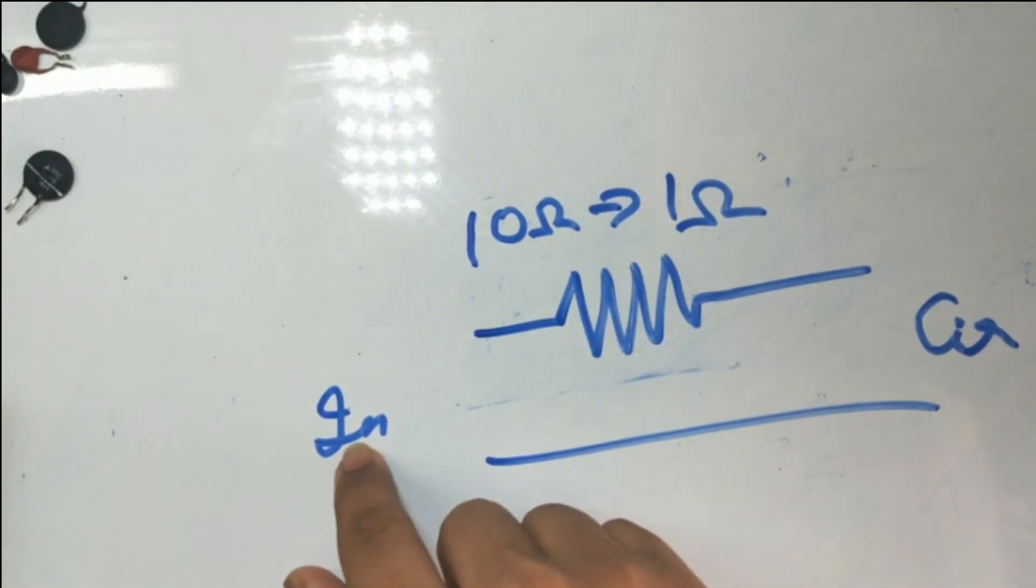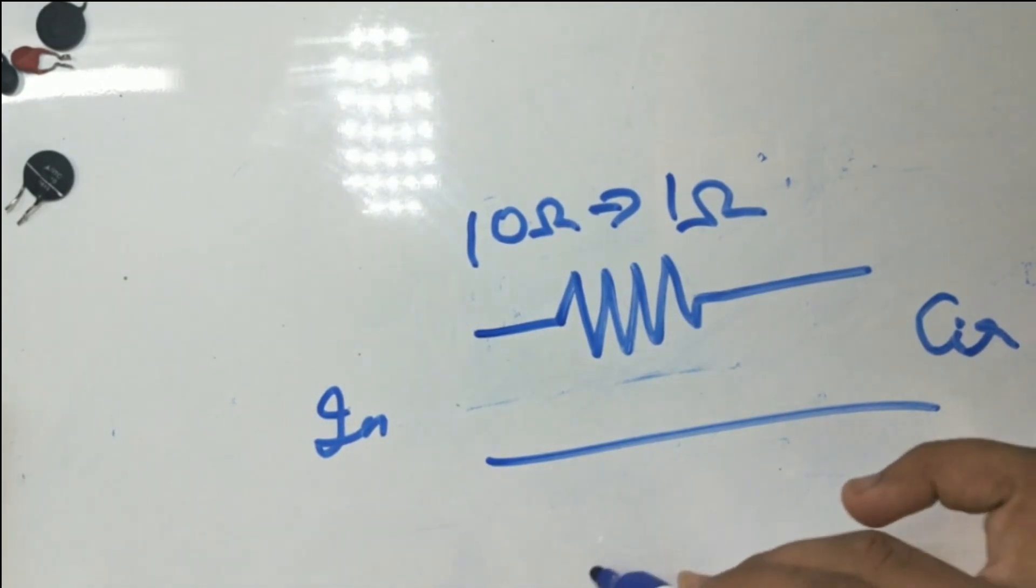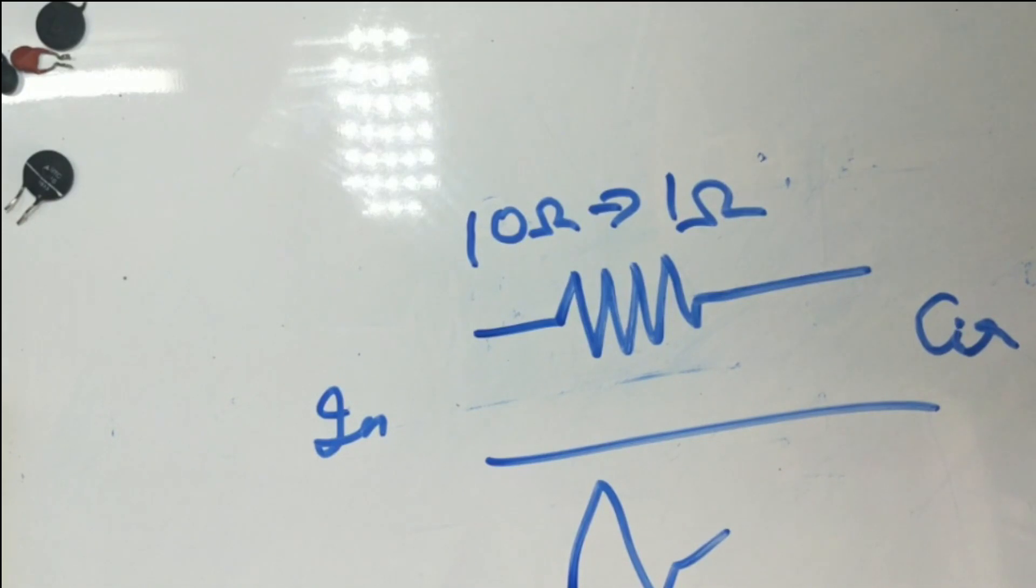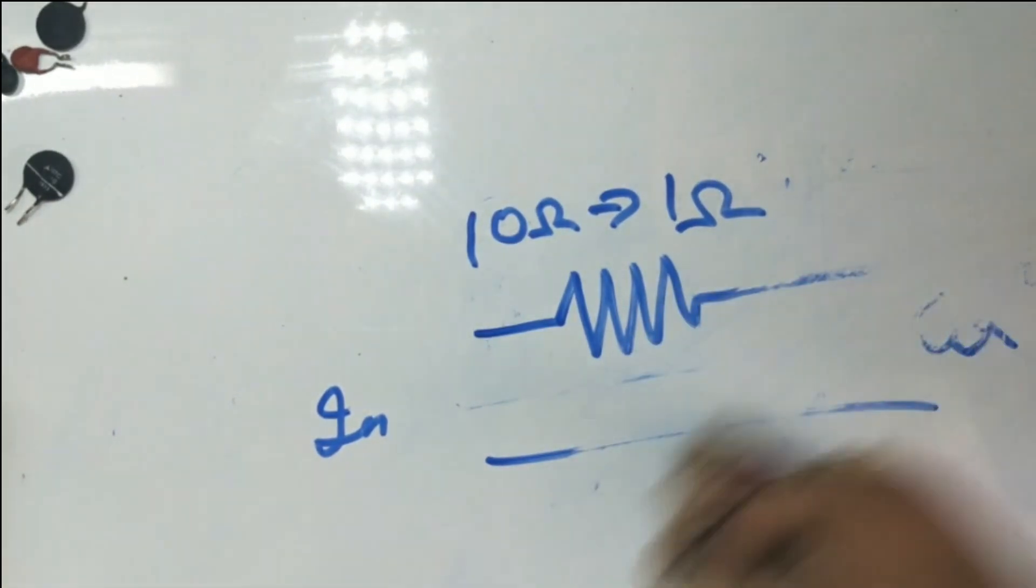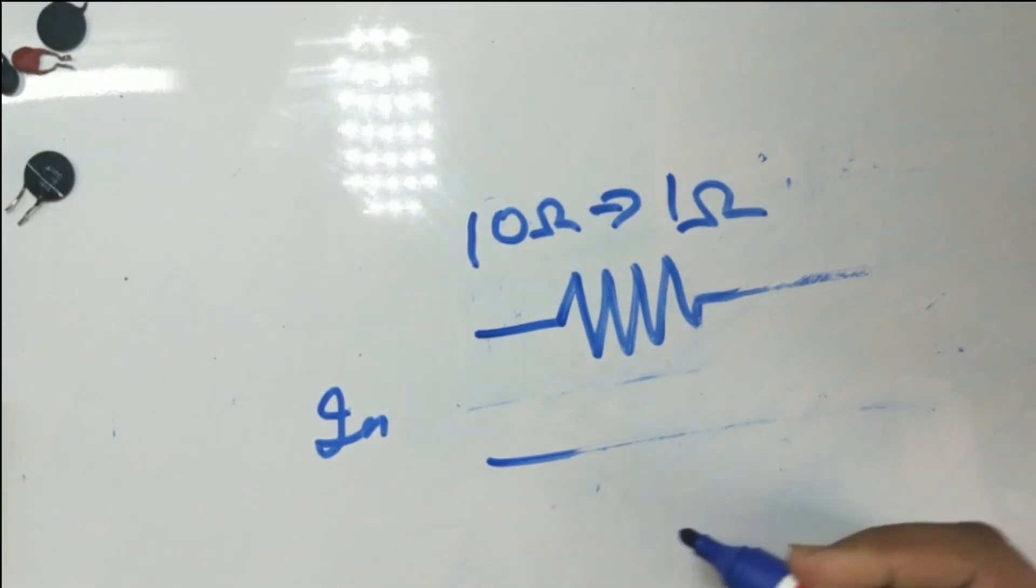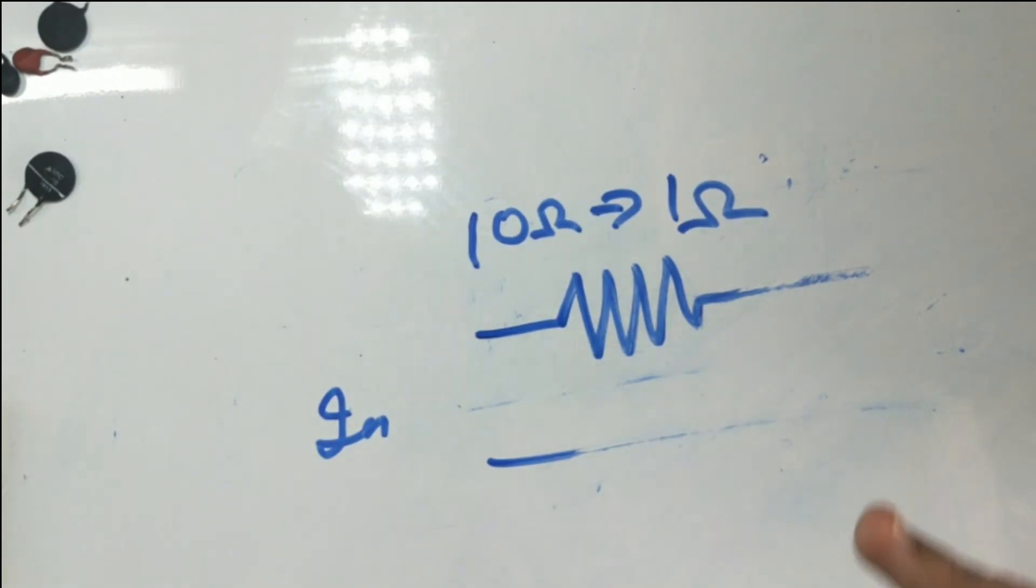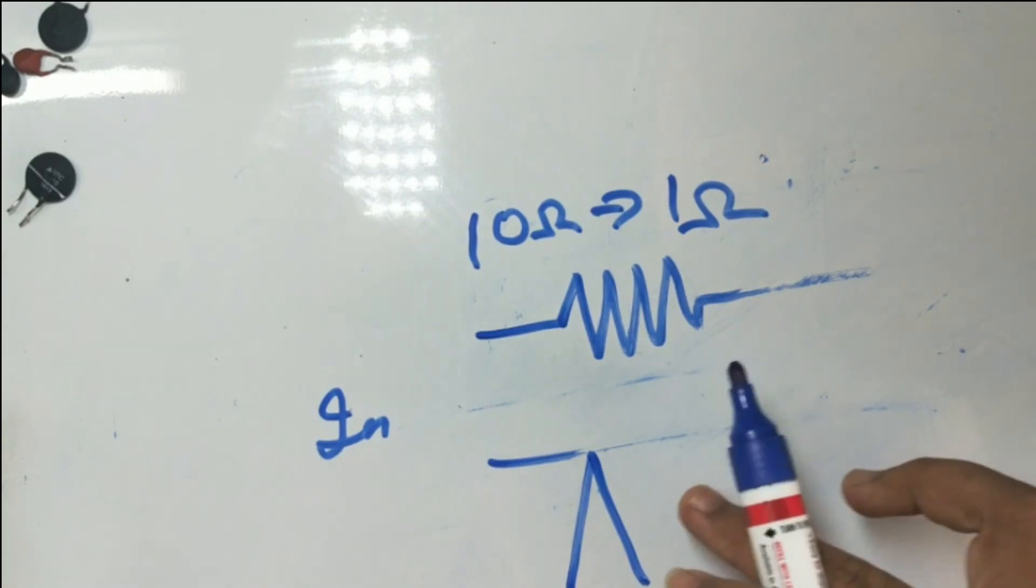That's why many electricians tell you not to on-off your switch very fast. If you switch on, switch off, switch on, switch off like that very fast, your device might get damaged due to the spike.